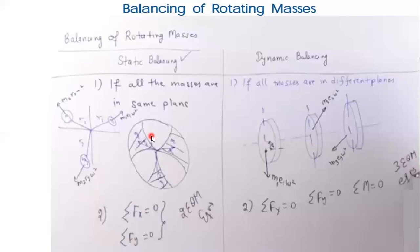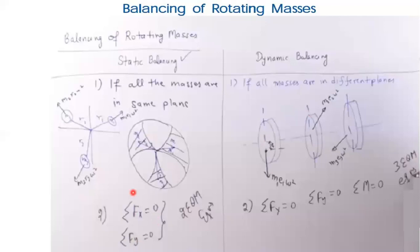In static balancing we will be getting two equations: summation of forces along the x-axis will be zero and summation of forces along the y-axis will be zero. We only deal with forces, not couples. Whereas in dynamic balancing, summation of forces will be zero as well as the couple or moment will also be zero, giving us three equations.